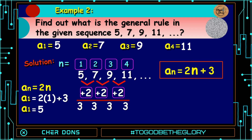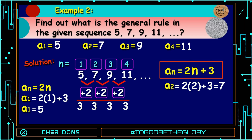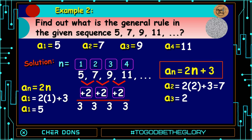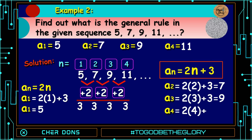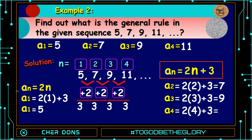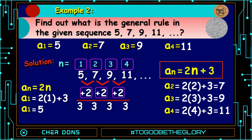Solving for A sub 2: A sub 2 is equal to 2 multiplied by 2, that is 4 plus 3, equal to 7. For A sub 3, it is equal to 2 multiplied by 3, that is 6 plus 3, equal to 9. And A sub 4 is equal to 2 multiplied by 4, that is 8 plus 3, equal to 11.